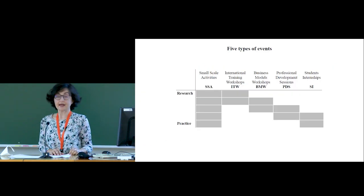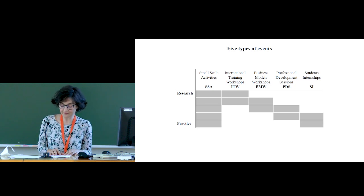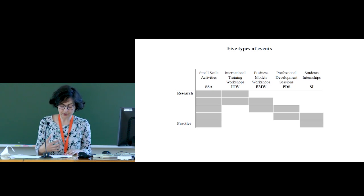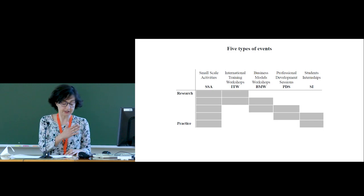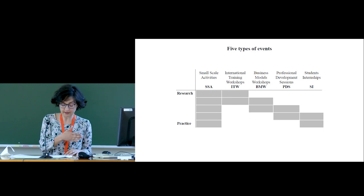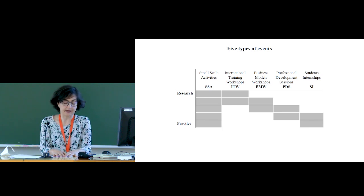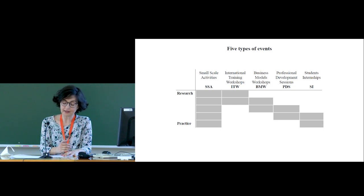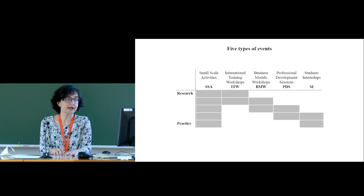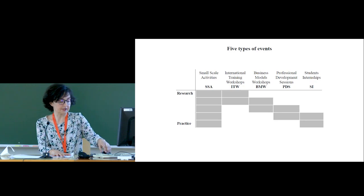Using these projects as case studies and framed by a previously defined pedagogic model, we built this process where, as you can see in this table, some events are driven from the research side toward practice, and other times it is practice that launches the event. We have five main types of events, and I will start from those that came from research into practice, and then those that came from practice to research. The first kind — small-scale activities — is launched by both research and practice.